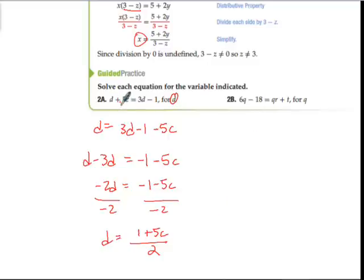Let's take a look at 2B. I'm going to go ahead and walk through this one with you also, just to make sure we know what we're doing. This one we're solving for Q. So let's go ahead and add 18 to both sides. We have 6Q equals QR plus T plus 18. Then we're going to subtract QR. So 6Q minus QR equals T plus 18.